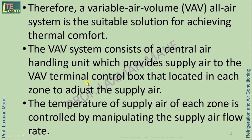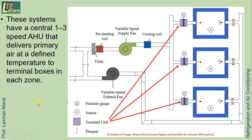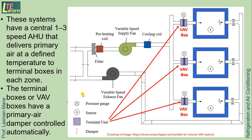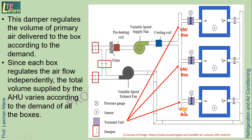The VAV terminal control box: these systems have a central air handling unit that delivers primary air at a defined temperature to terminal boxes in each zone, called VAV boxes. The terminal boxes or VAV boxes have a primary air damper that is controlled automatically. These dampers regulate the volume of primary air delivered to the boxes according to demand. Since each box regulates airflow independently, the total volume supplied by the air handling unit varies according to the demand of all VAV boxes.